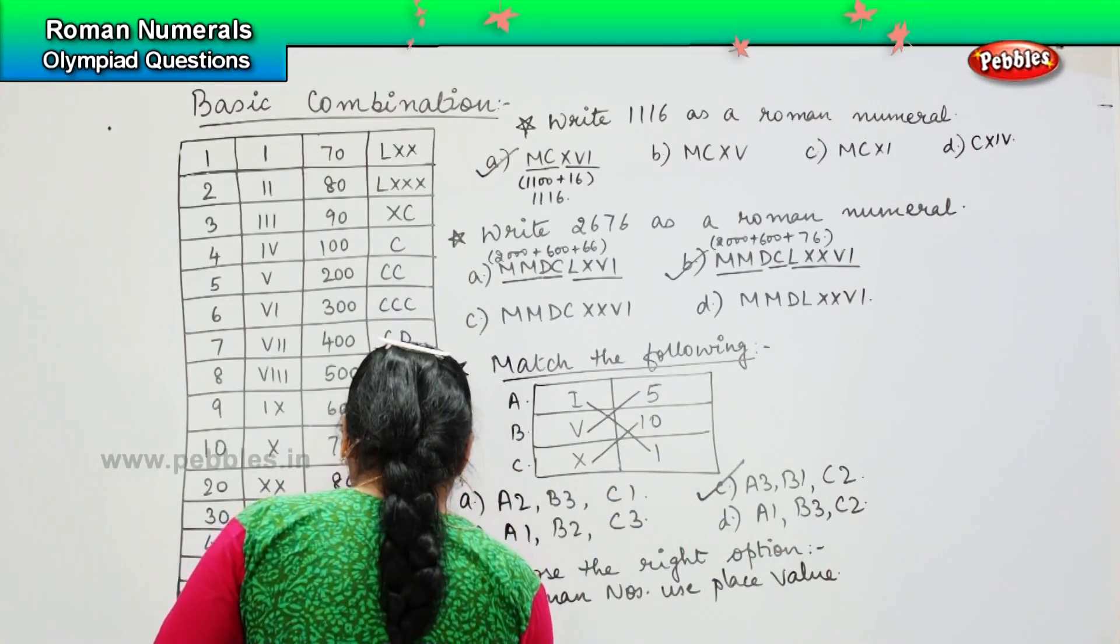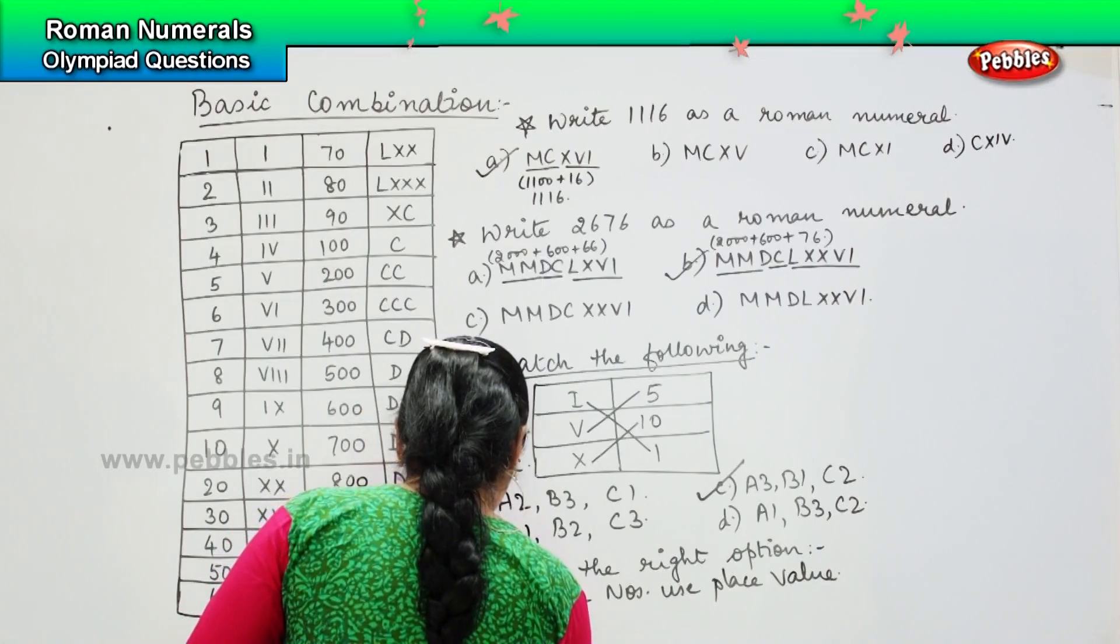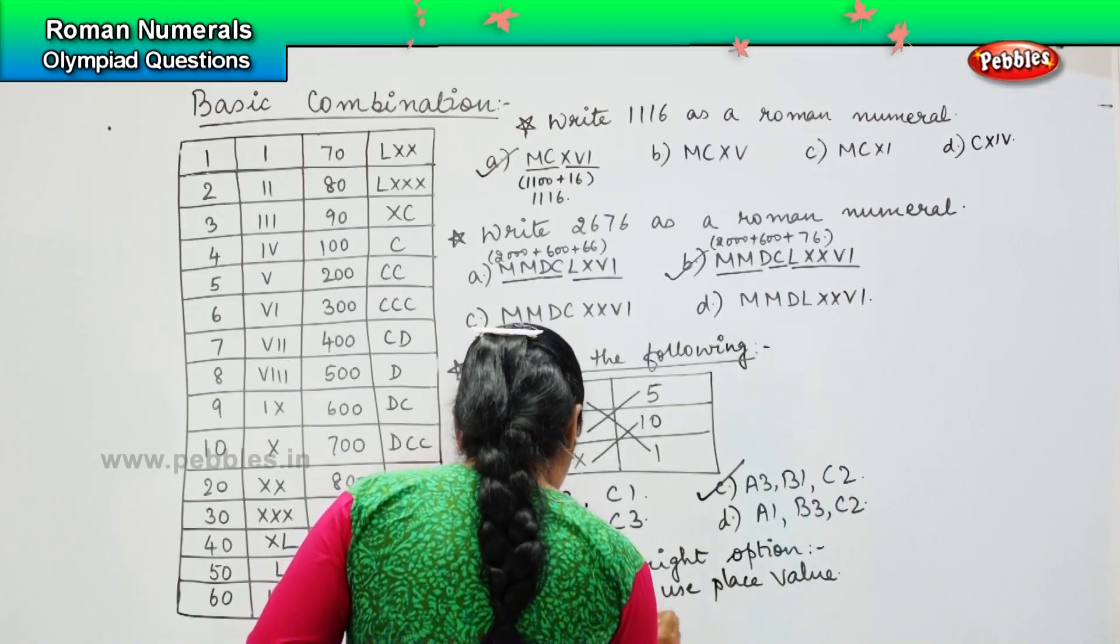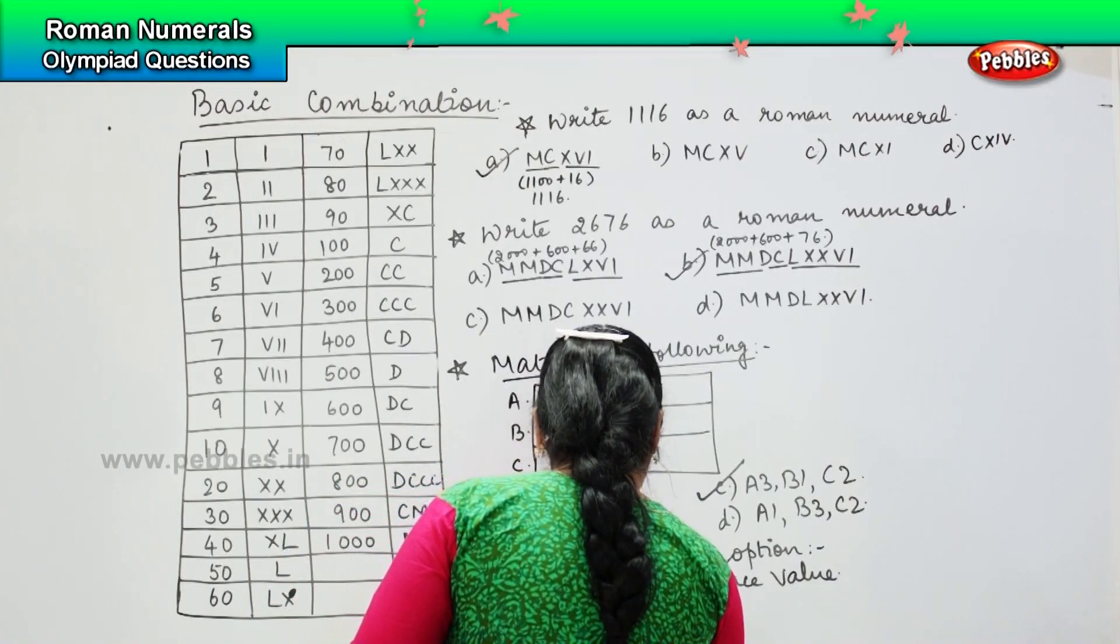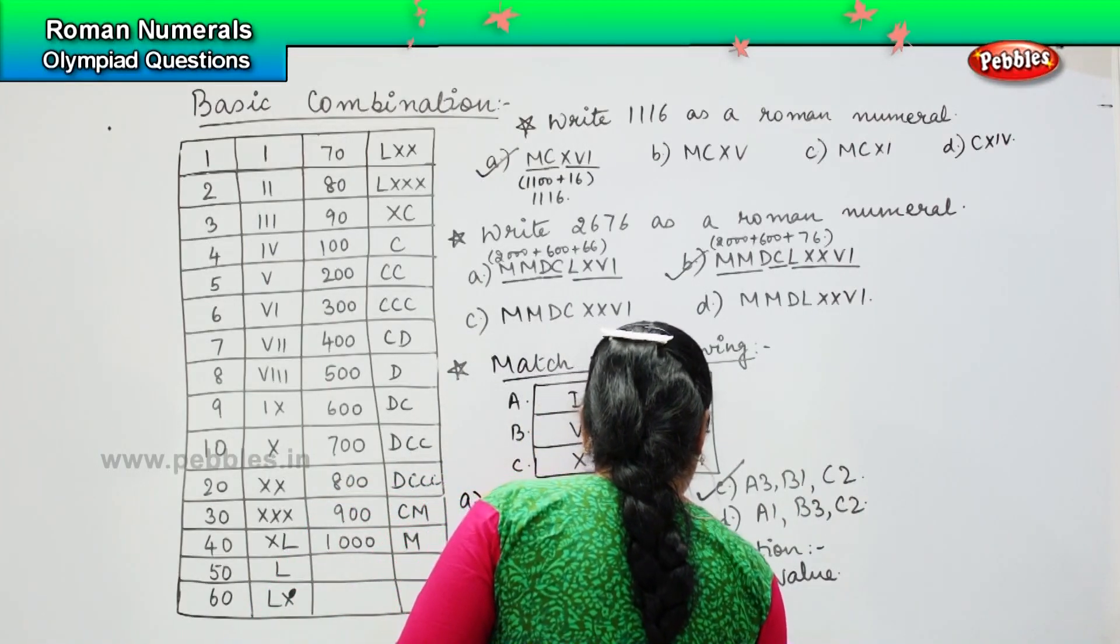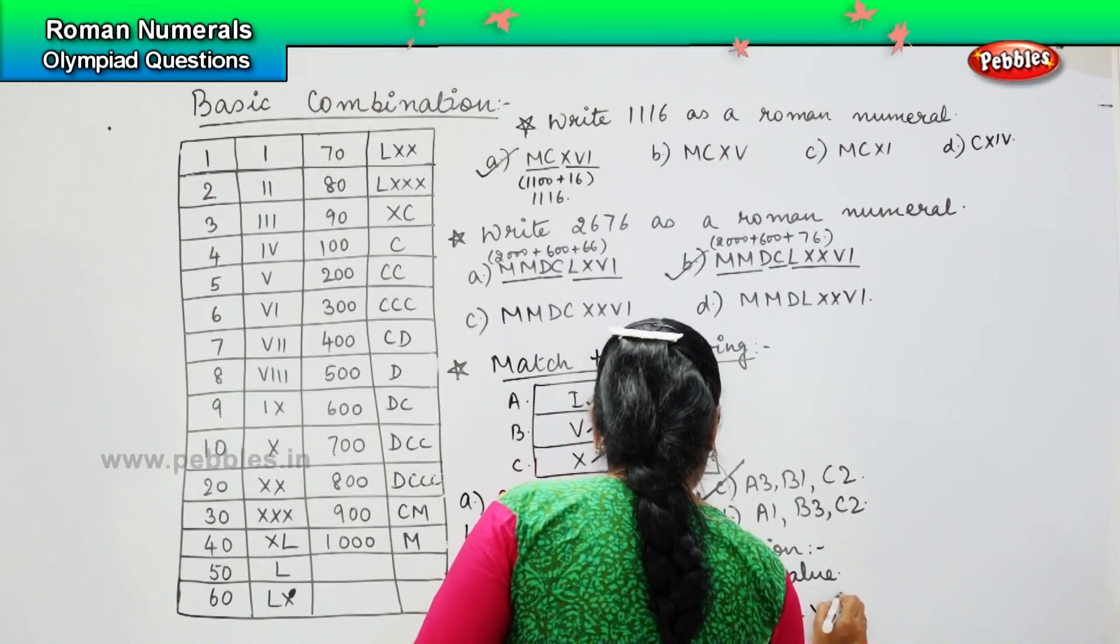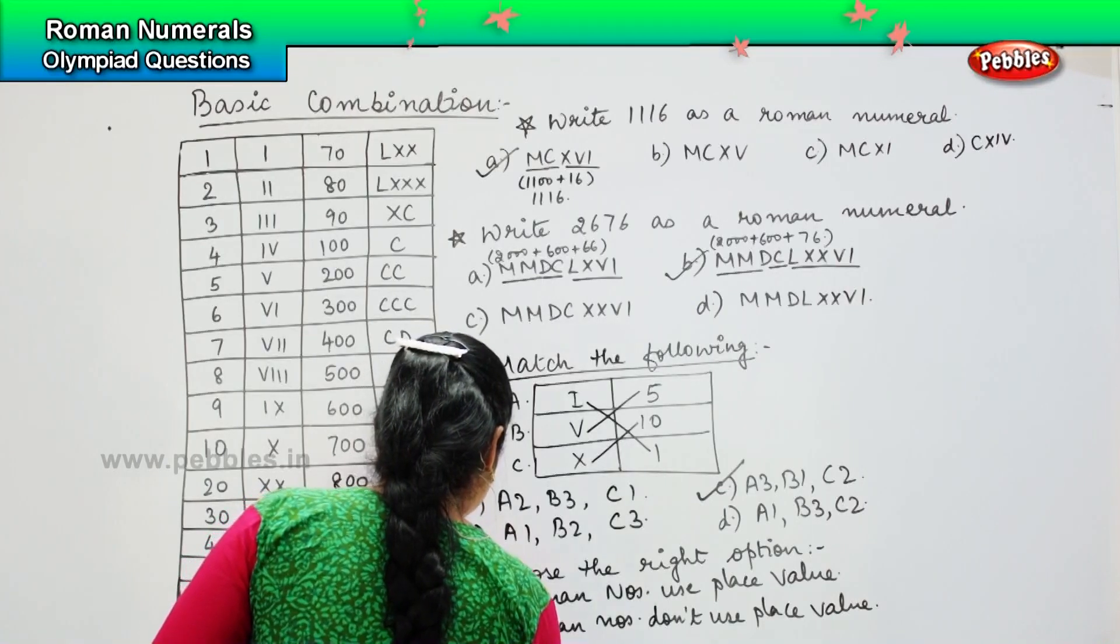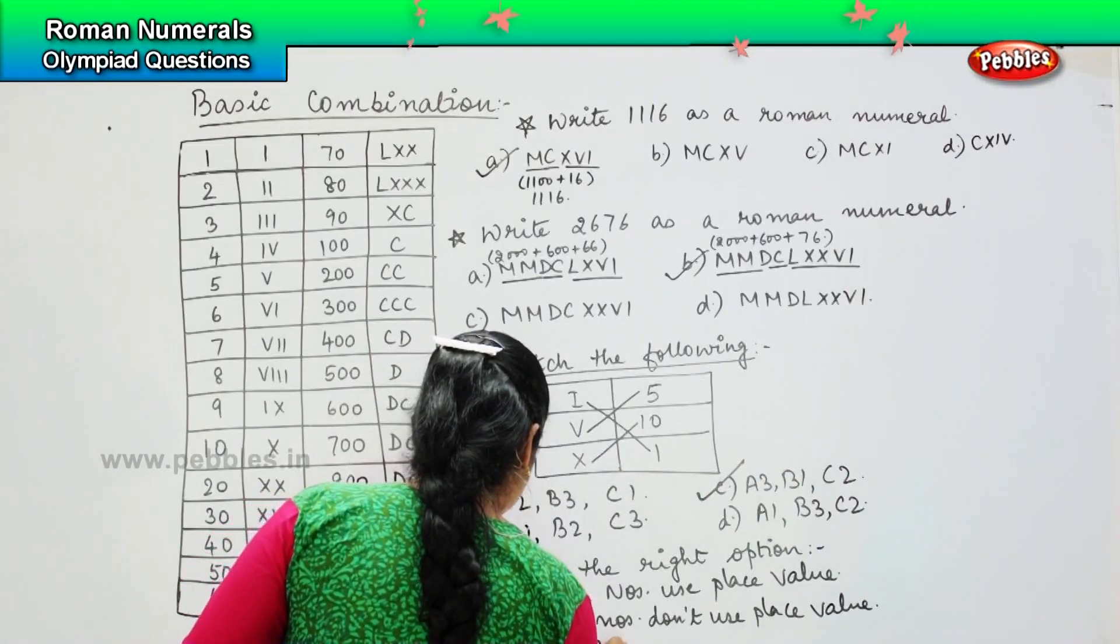Option B: Roman numbers do not use place value. Option C: both are correct.